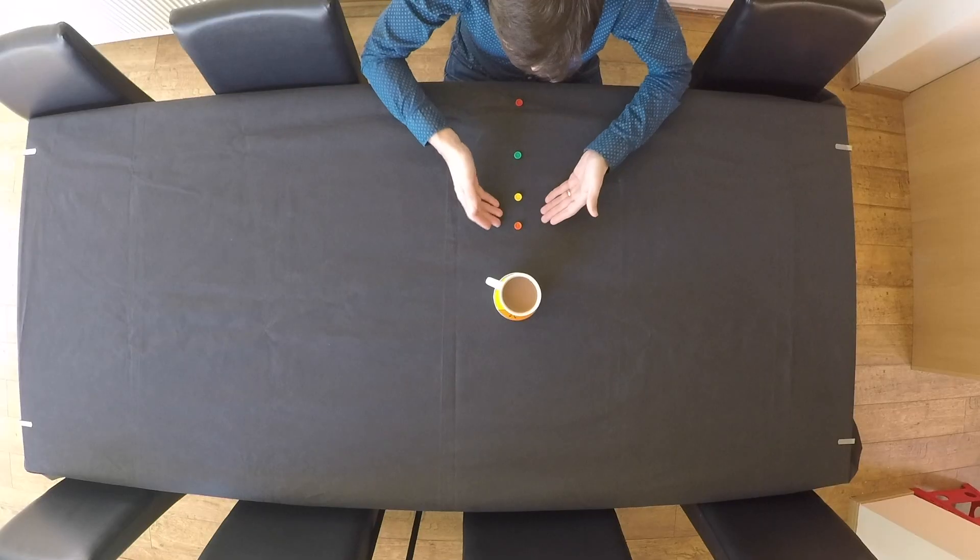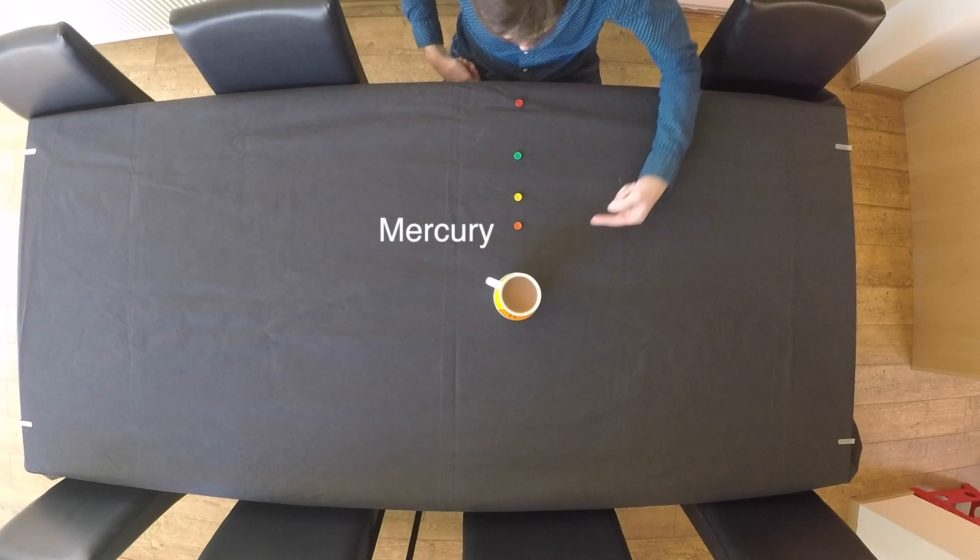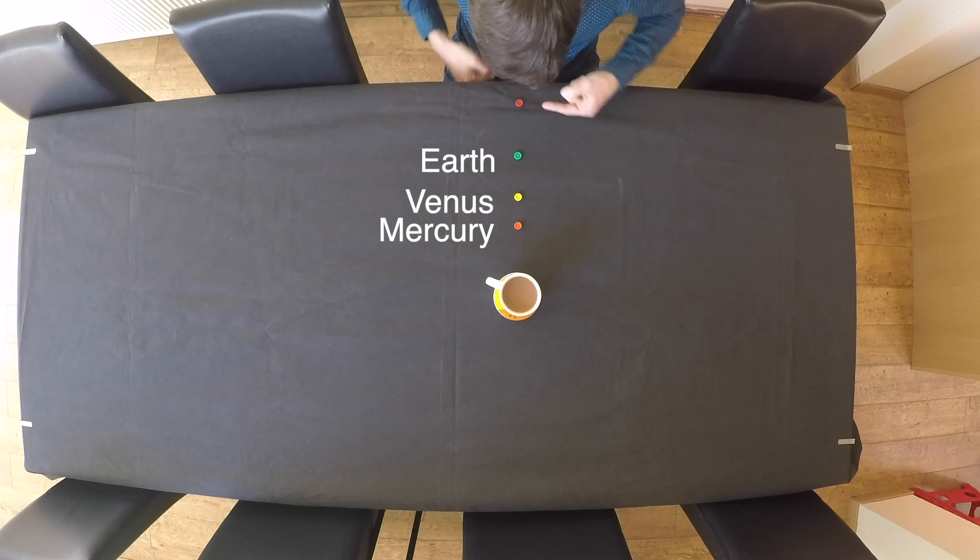We'll use my mug of coffee here to represent the Sun and these counters to represent Mercury, Venus, Earth and Mars. I must point out this isn't to scale but it does show the right relative distances.